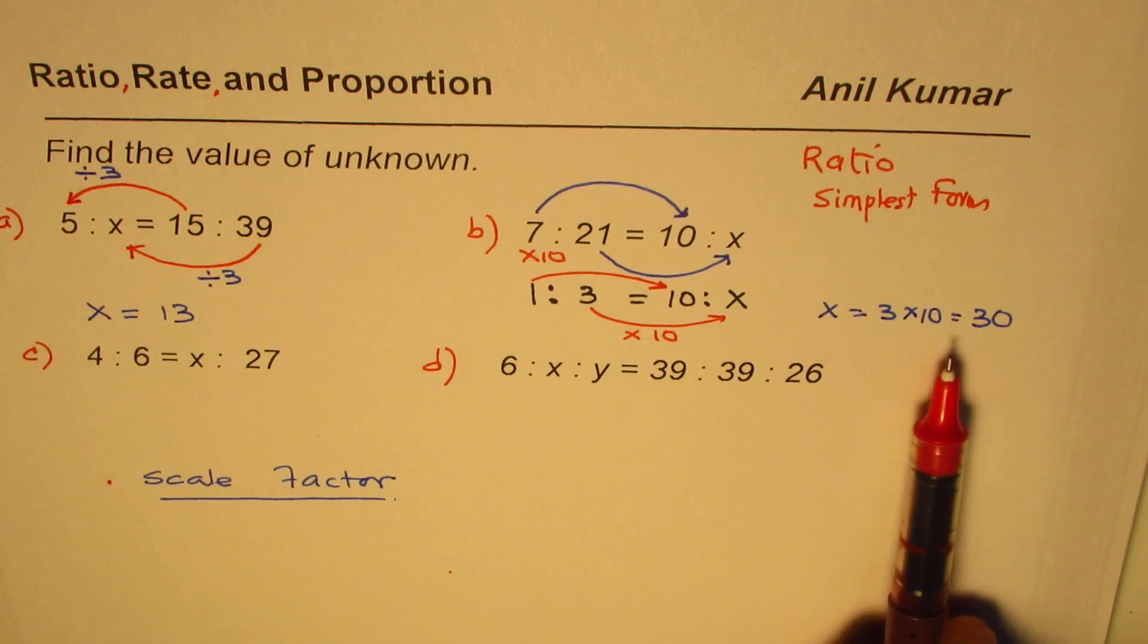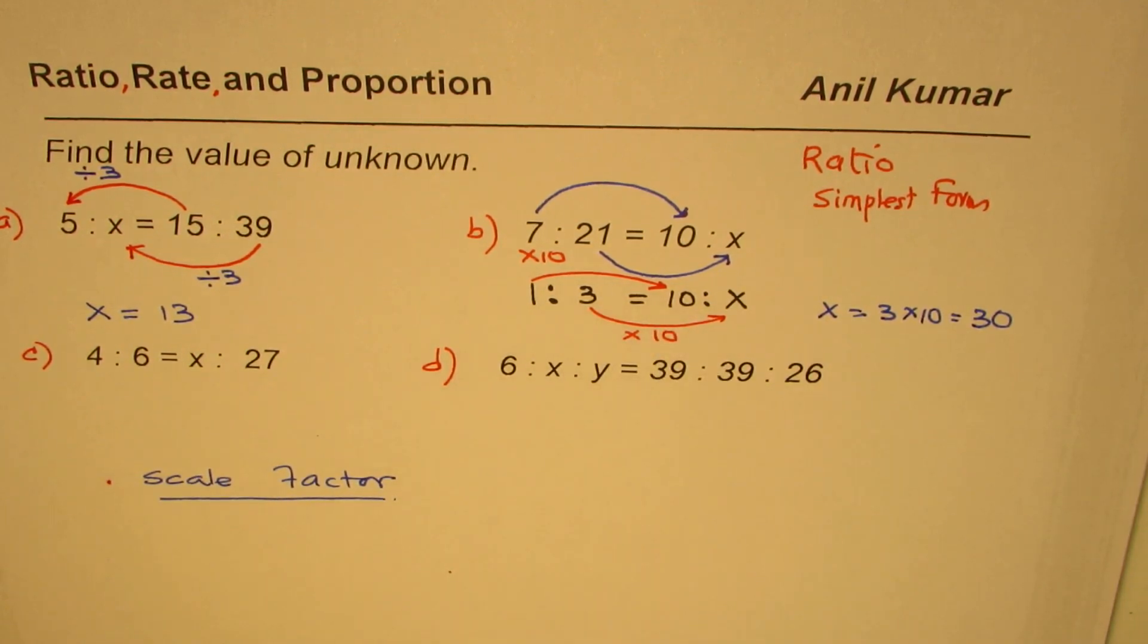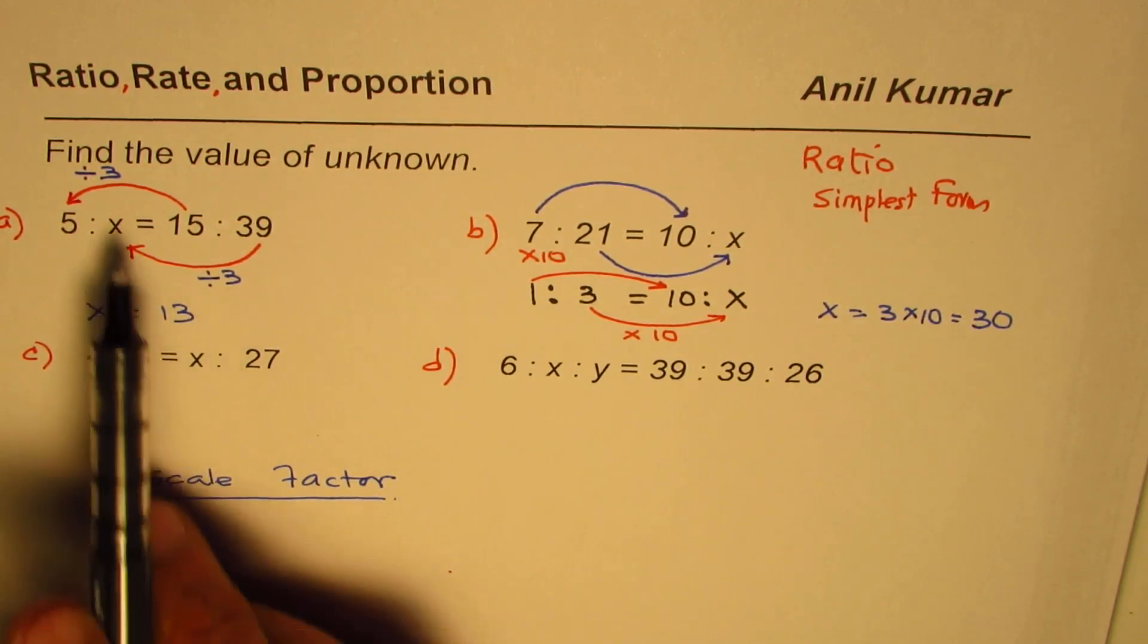So I hope you understand the strategy. The strategy is simplify and then answer. So the next question is to apply this strategy. 4 is to 6 equals to x is to 27. You need to find the value of x. We have again changed the position of x. It doesn't really matter. X position could be anywhere.